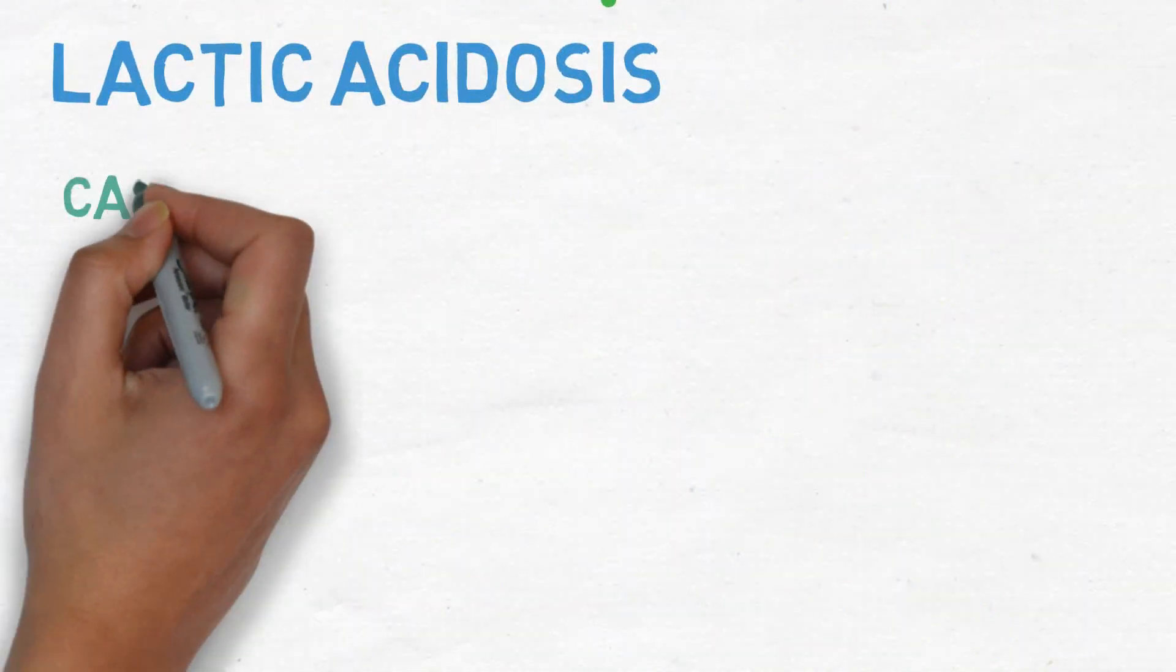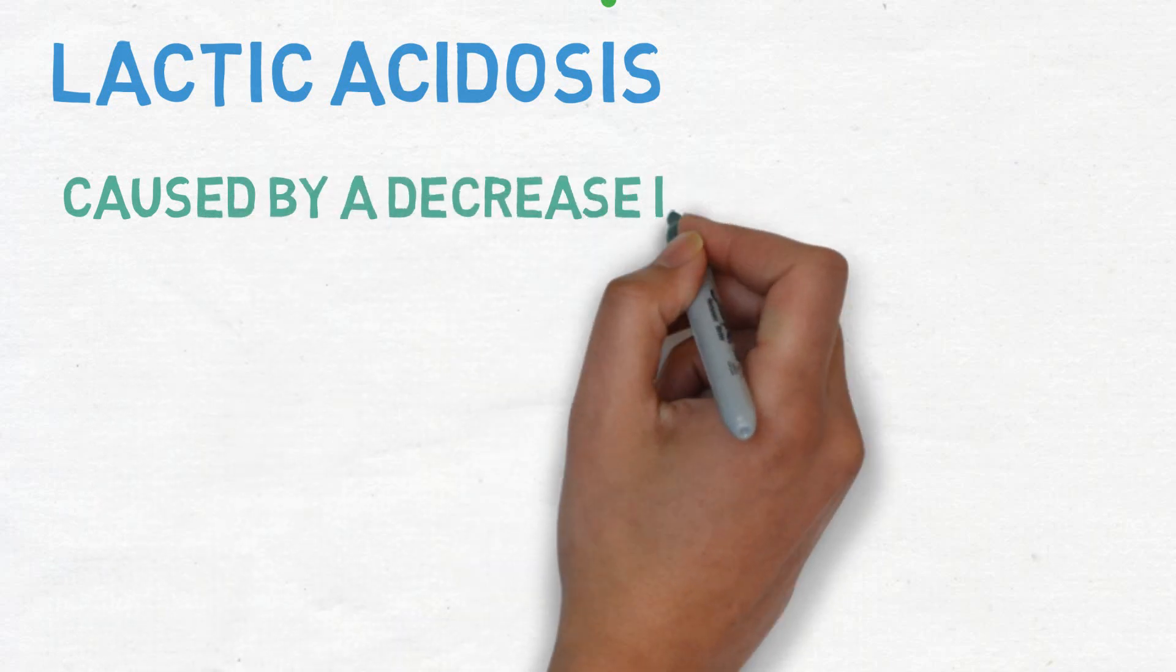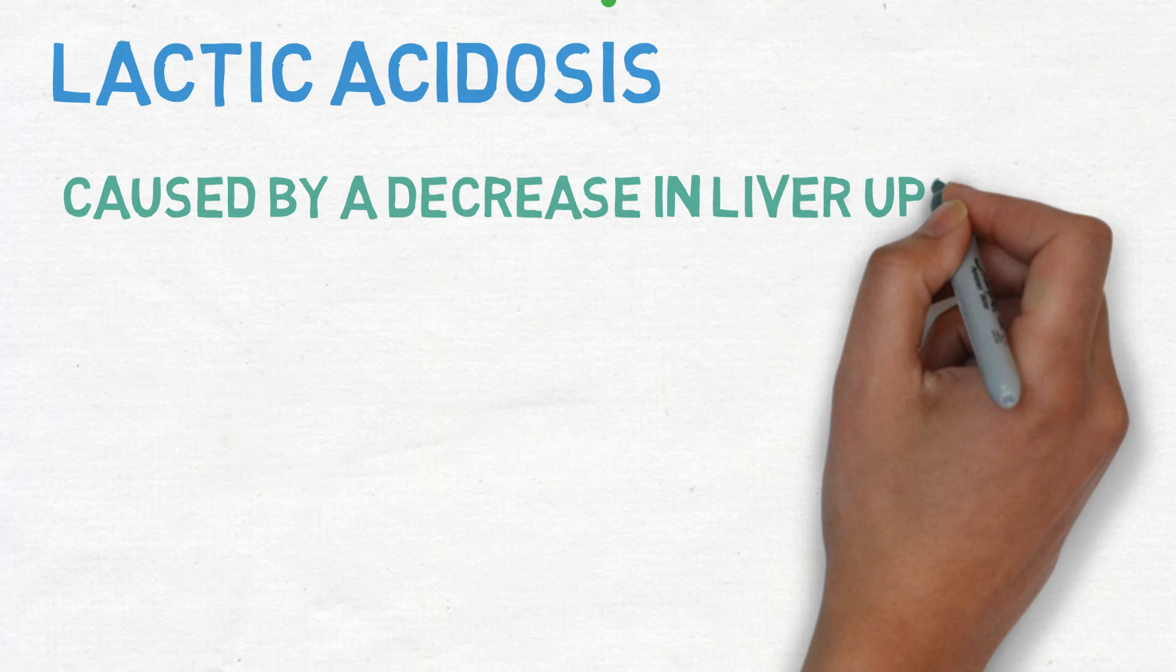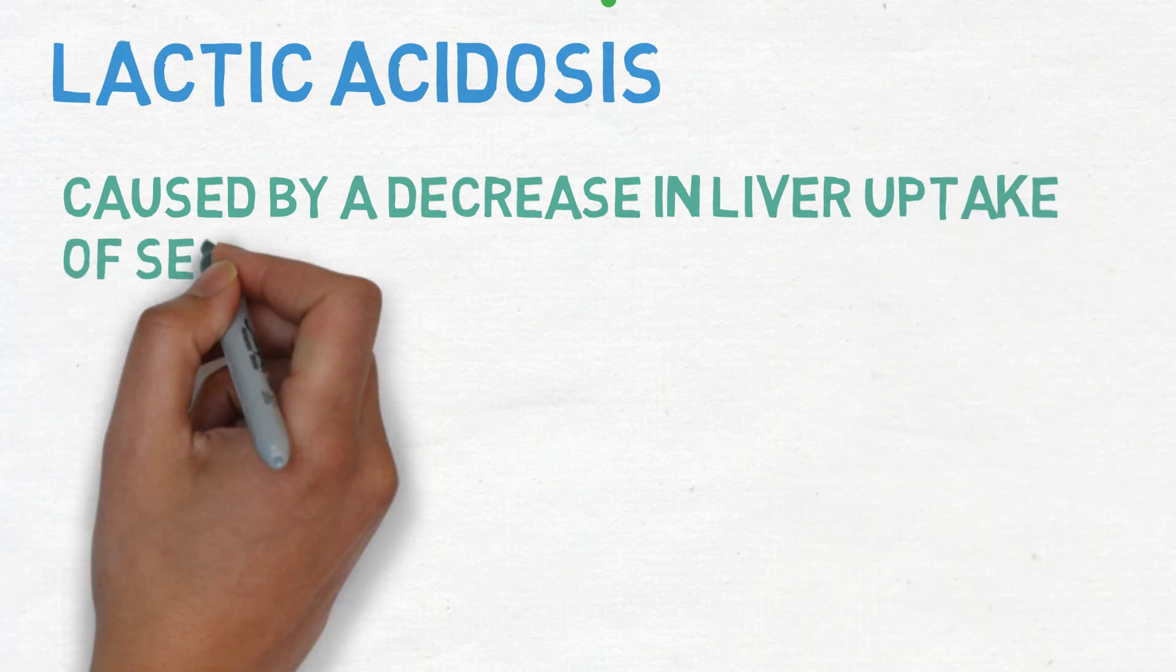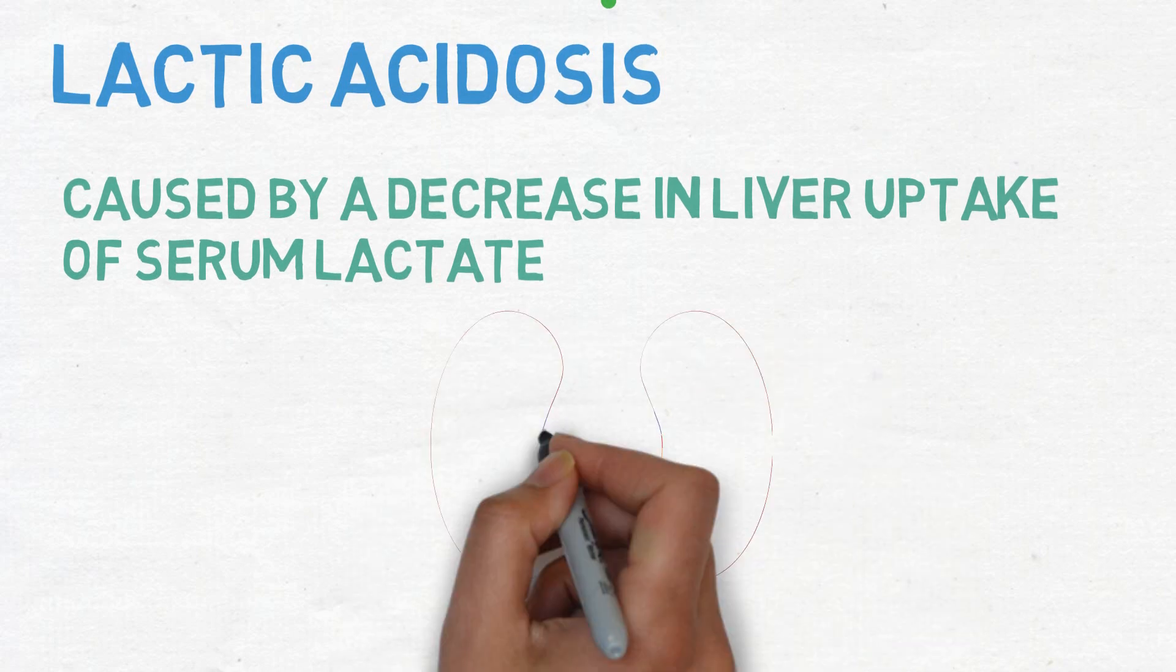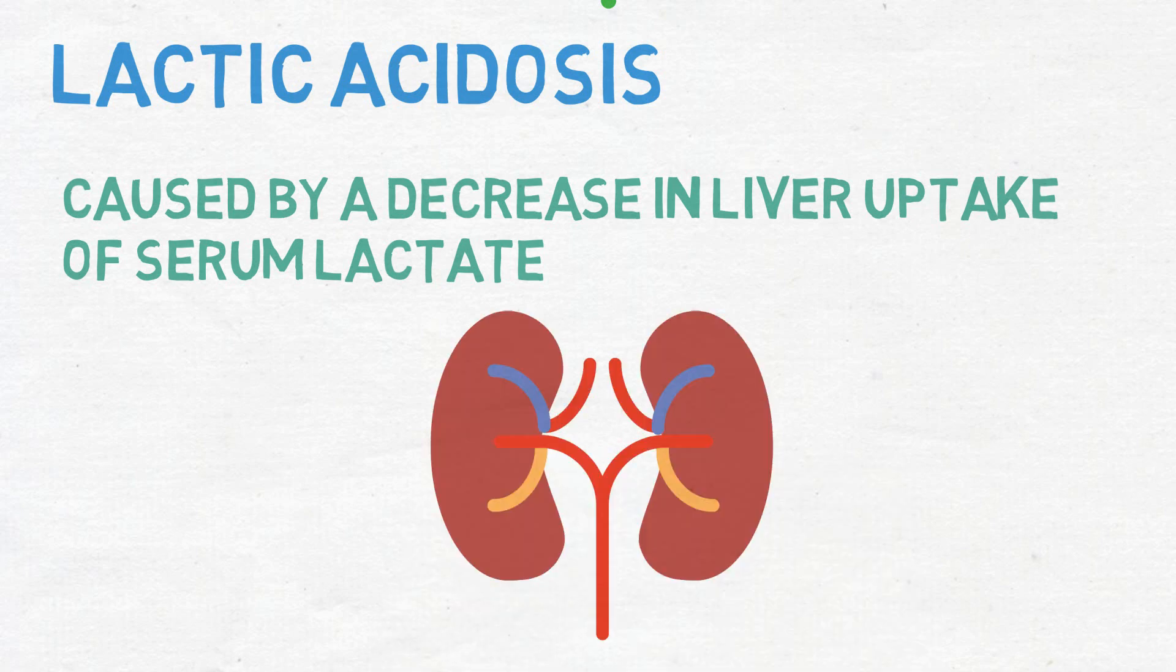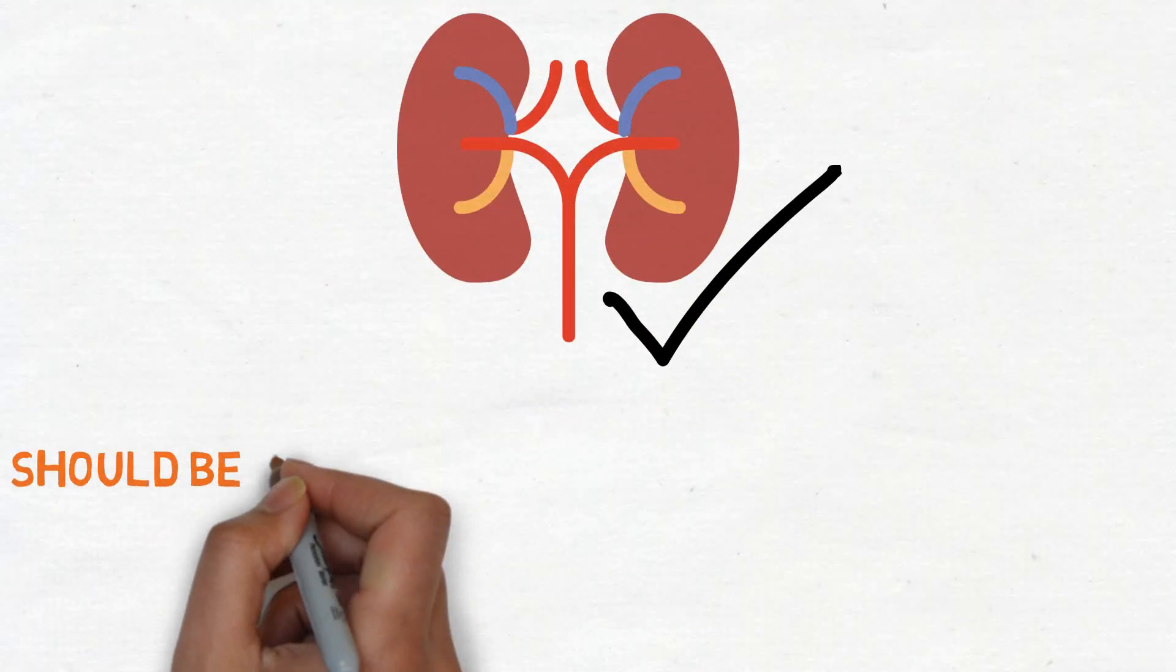Lactic acidosis is thought to be caused by a decrease in liver uptake of serum lactate, one of the substrates of gluconeogenesis. In people with healthy renal function, the excess lactate will be cleared.